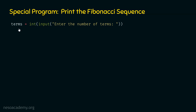The next step is to declare two variables, n1 and n2, and assign them 0 and 1. n1 must be equal to 0 and n2 must be equal to 1. These two variables represent the first and the second value of the Fibonacci sequence, which are fixed, so we can declare them at the beginning.